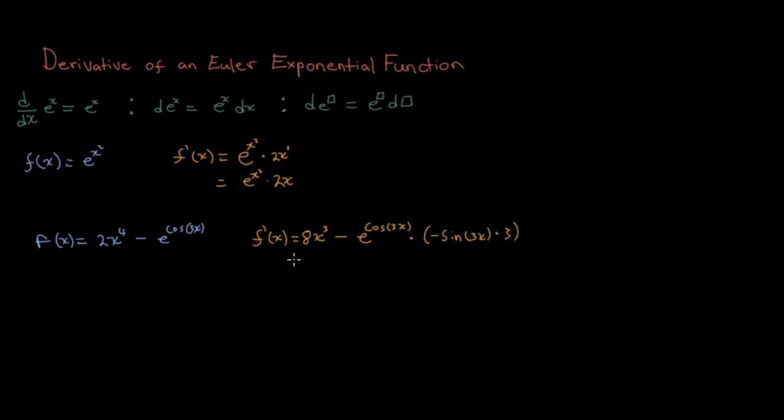So to simplify this even further, we can write it as such: 8x cubed plus, because the two negative signs cancel out here, 3 sine 3x times e to the power of cos 3x. That's this term right here.